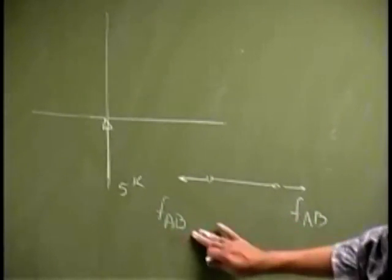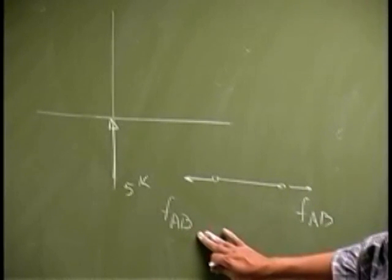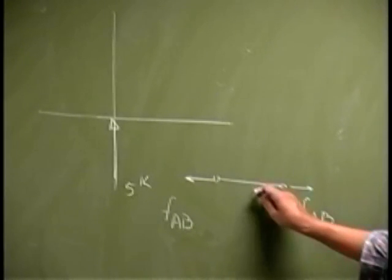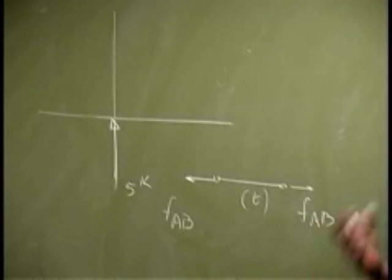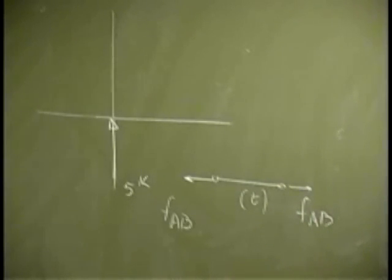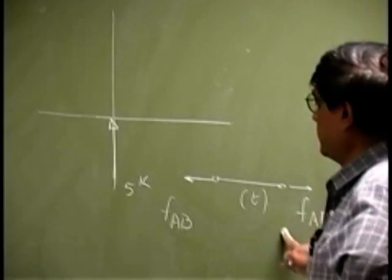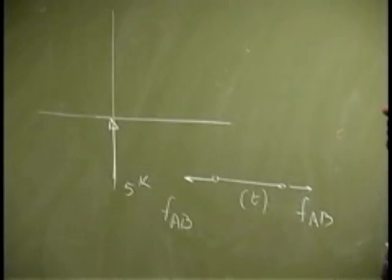And even this direction which I am choosing is not really known. I am assuming that that particular member is in tension. And the moment I assume that, that is what is going to be the force in AB.